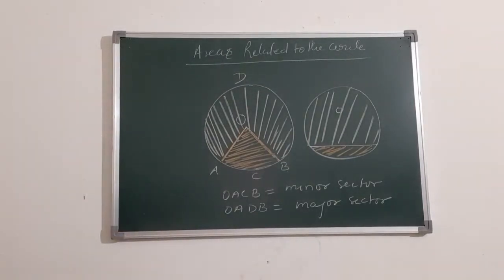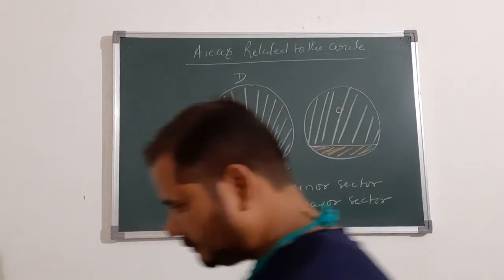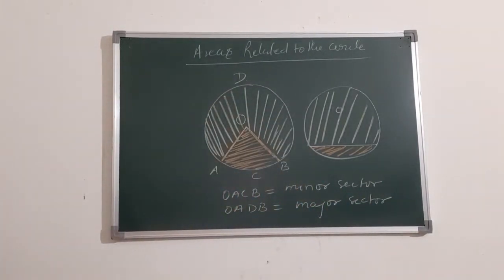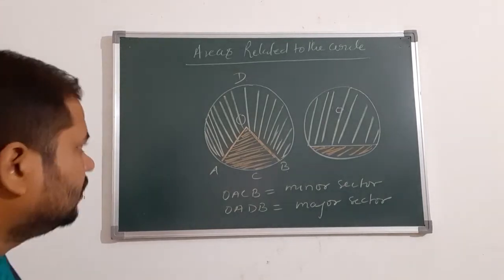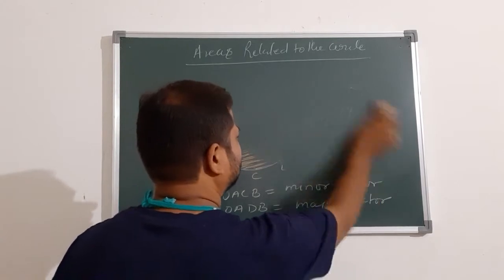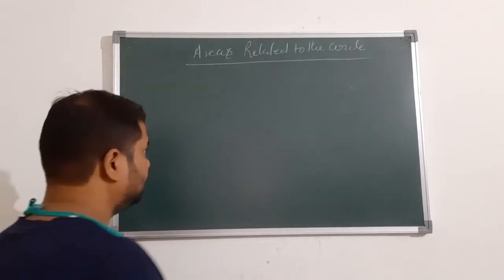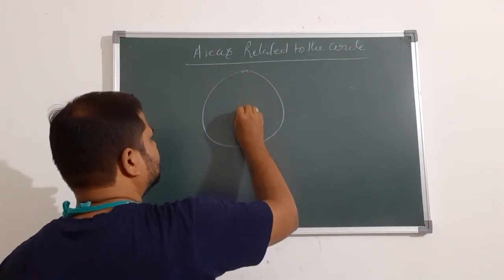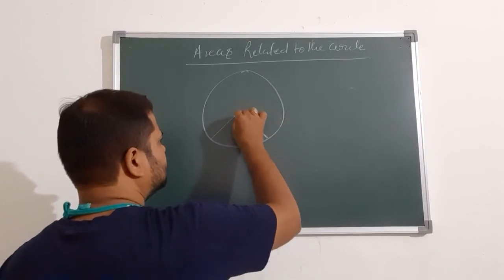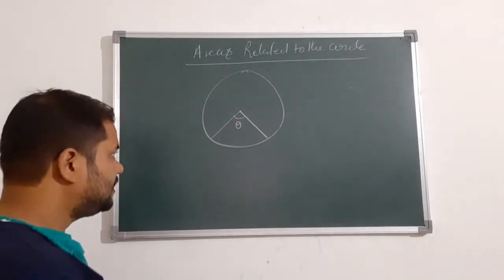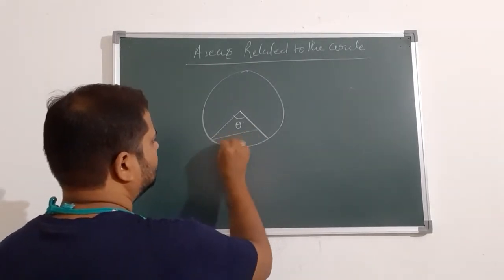So note it down. Now area of sector. So suppose this is the circle, this is the center O, this is the key card. So area of this sector, area of this sector.